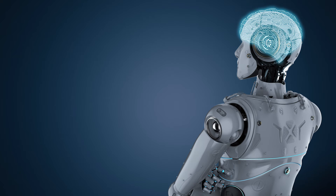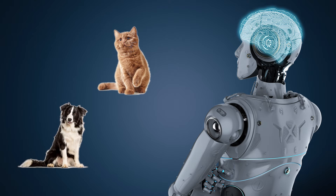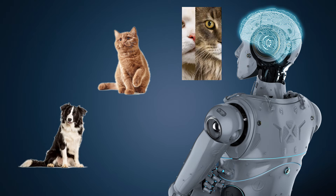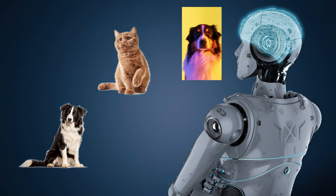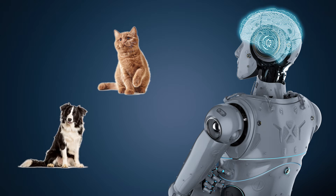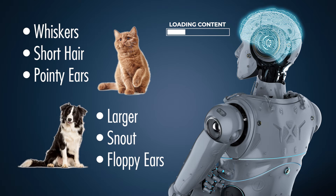For this, we go back to how an AI learns. If we want to create an AI that can tell the difference between a cat and a dog, we have to show it a lot of pictures of cats and dogs. The computer analyzes those pictures and recognizes patterns.